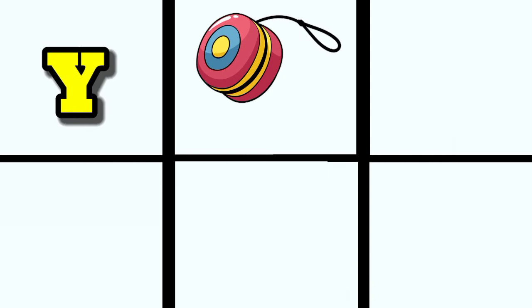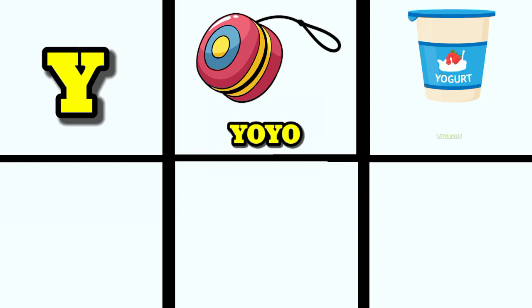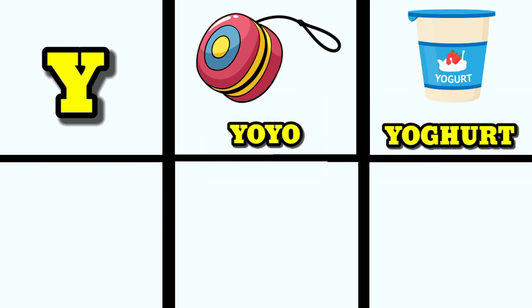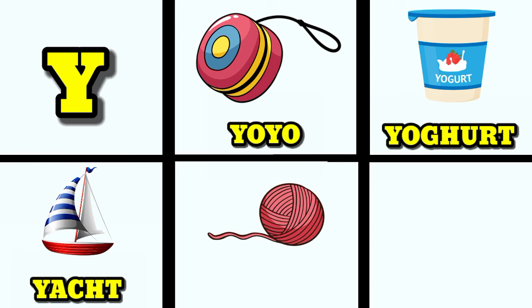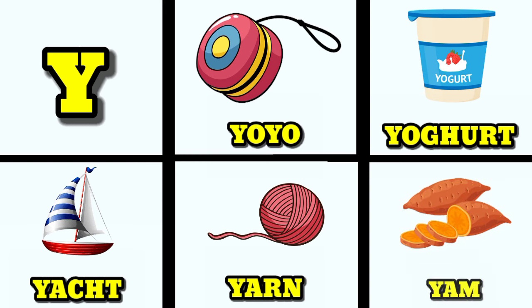Y is for yo-yo. Y is for yogurt. Y is for yacht. Y is for yarn. Y is for yam.